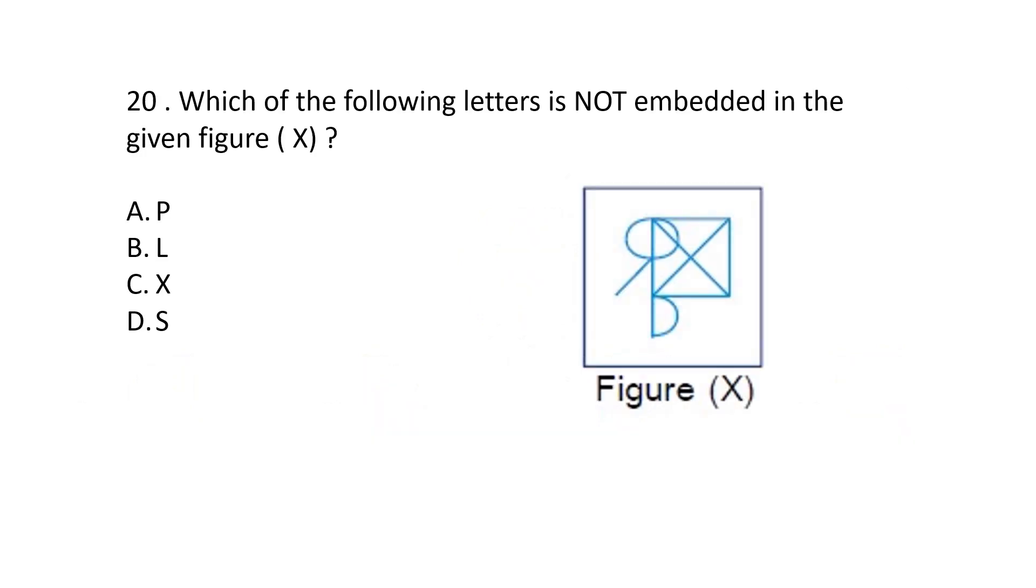Question number 20. Which of the following letters is not embedded in the given figure X? From option A, P. We can see P here. Clearly visible. L is also here. This is L. X is here. But S is not embedded in this figure. Answer is option D, S.